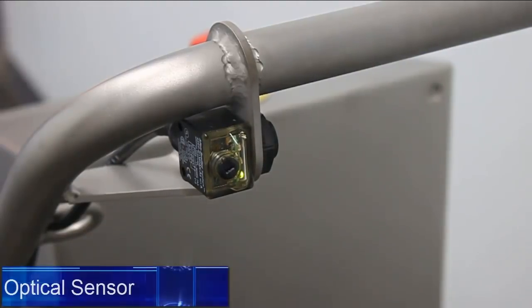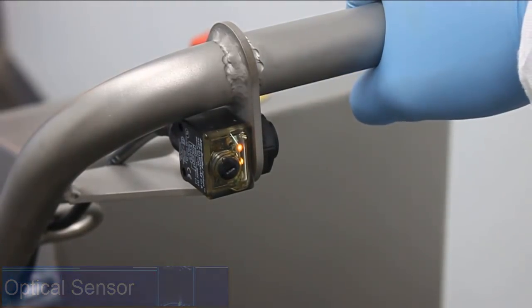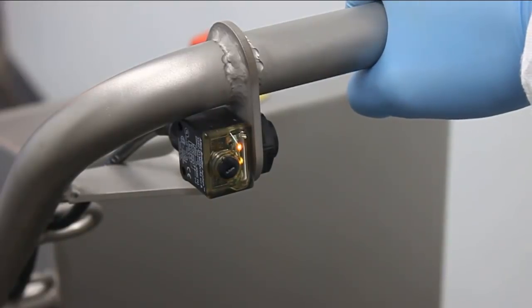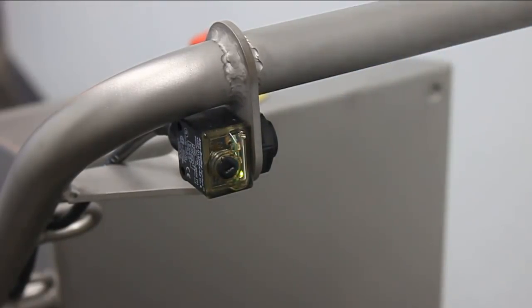The unit is activated by the user placing their hand by the optical sensor. When the sensor is tripped, the machine will activate for an allotted time chosen by the customer, spraying chemical and water onto the brushes.